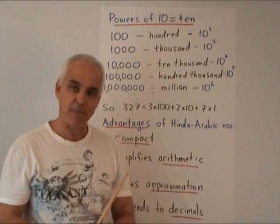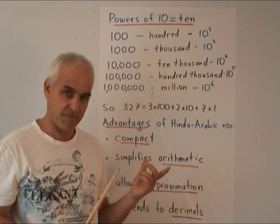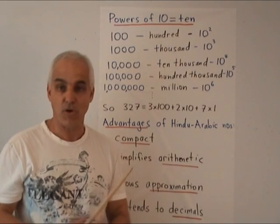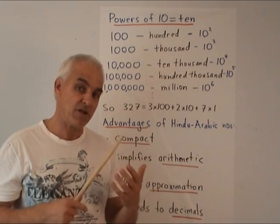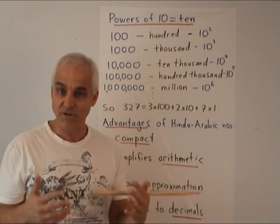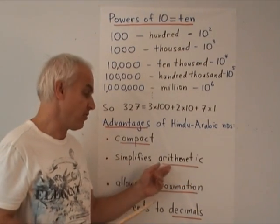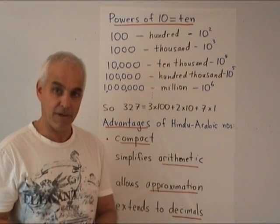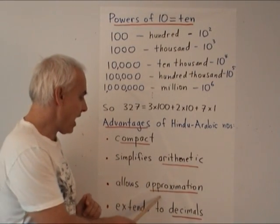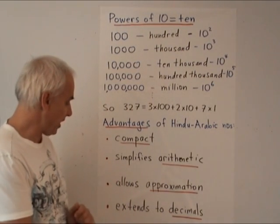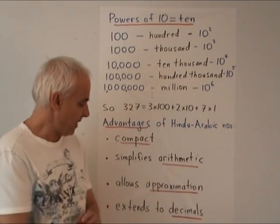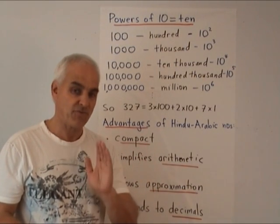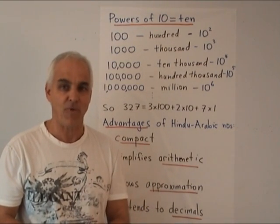So what are the advantages of the Hindu-Arabic number system? First of all, it's very compact. Secondly, it simplifies arithmetic dramatically. In ancient times, only very well-educated people could hope to do simple multiplications, and even reasonably complicated multiplications could only be done approximately because of the cumbersome nature of Roman and other systems. With Hindu-Arabic arithmetic, even young people in primary school can learn to multiply large numbers by hand. It also allows approximation in a very effective way, which we'll discuss when we extend the system to decimals — a key point in its importance for scientific work. This is really a fabulous innovation; one can't overestimate how important this was to the modern world.